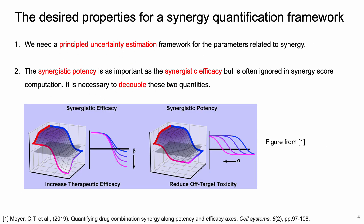Therefore, we argue that we need a principled uncertainty estimation framework for the parameters related to synergy. Another important aspect that should not be ignored is to properly distinguish between synergistic efficacy and synergistic potency. If a combination is synergistically efficacious, it means the maximum viability is improved. On the other hand, if a combination is synergistically potent, a smaller dosage is required to reach the same level of viability, which can potentially reduce off-target toxicity. These are two different aspects of synergy that should be analyzed separately.